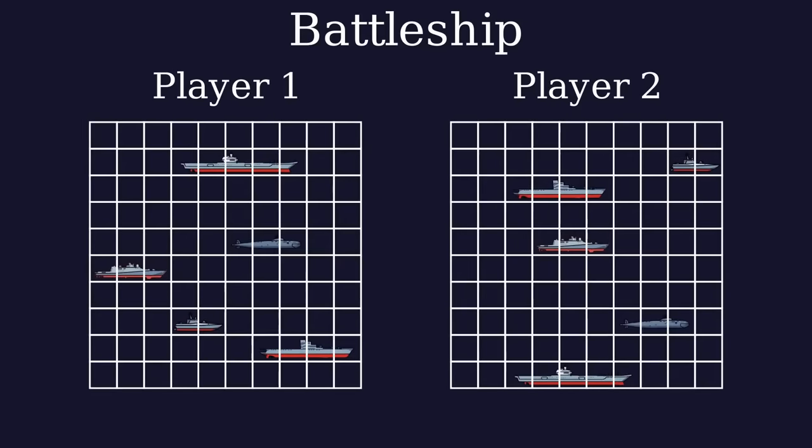Ships can be placed horizontally or vertically, but not diagonally. You can't see where your opponent put their ships. Players take turns picking a square on the opponent's grid to shoot at.